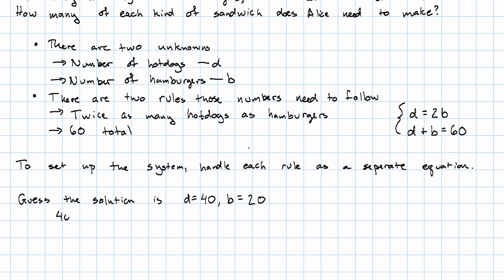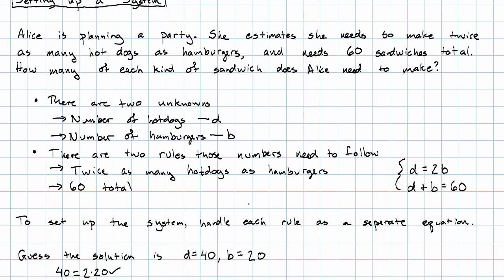Because 40 does equal 2 times 20, and 40 plus 20 equals 60. So our solution is to make 40 hot dogs and 20 hamburgers. What are the key ideas here?